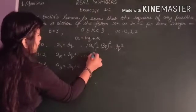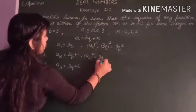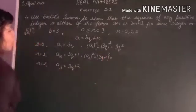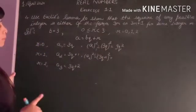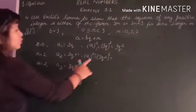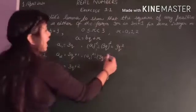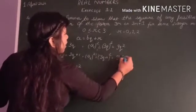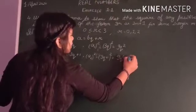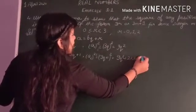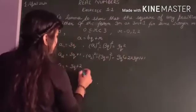Now, a2 whole square is 3q plus 1 whole square. So see here we will use the identity a plus b whole square, which is a square plus b square plus 2ab. So by opening this with this identity, we are getting 9q square plus 2 into 3q multiplied by 1 and plus 1 square.